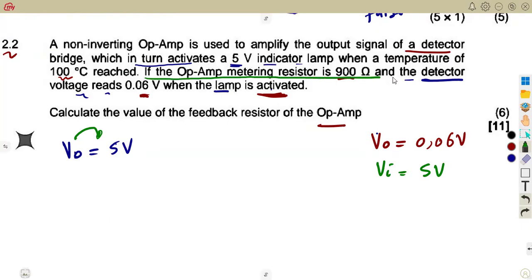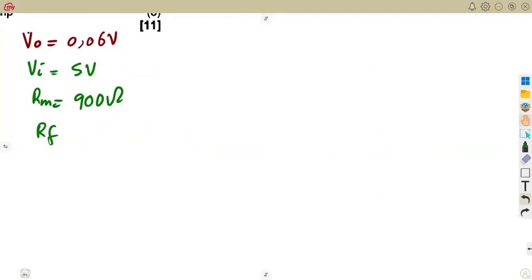Now, this is the part of the op-amp here. So we have to take that as the output there. They are now talking of the op-amp metering. Whatever that we are talking about is of the op-amp. So the detector voltage reads when the lamp is activated. The lamp is activated there on that detector bridge. So the output that is reading now is the output of the op-amp. Where the temperature is and that voltage, that is of the bridge. Then you are given your metering resistor, 900 ohms. What else do we need? That's what we need, that's what we are given. And they are saying calculate the value of the feedback resistor of the op-amp.